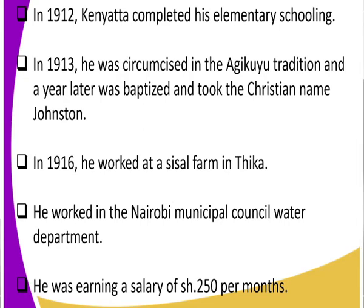So we have briefly looked at the early life of Jomo Kenyatta — from when he was born and how he lived, going to elementary school which he completed in 1912, being converted to Christianity and given the new name Johnstone, working in the sisal plantations, and going on to work in the Nairobi municipality in the water department. That is a brief outline of the early life of Jomo Kenyatta.